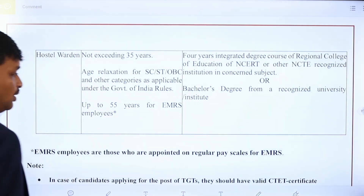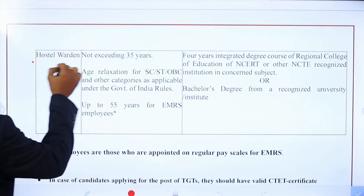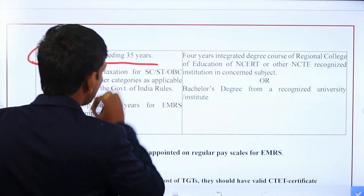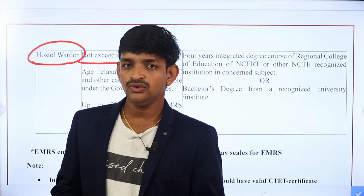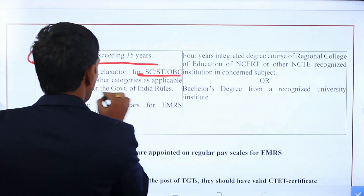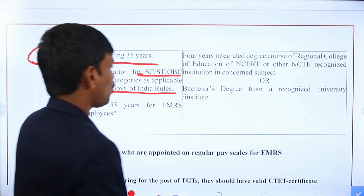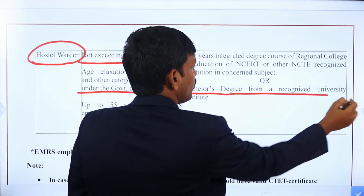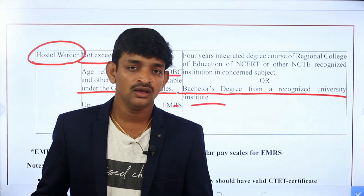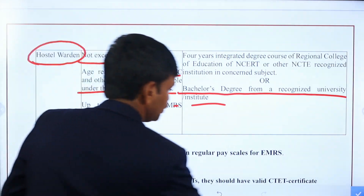For the Non-Teaching Category, the Hostel Warden post age limit is up to 35 years. For communities like SC, ST, and OBC, Government of India rules are applicable. For the education qualification for hostel warden, you should have completed a degree — BA or BSc. If you have a degree qualification, you can apply for the hostel warden jobs.